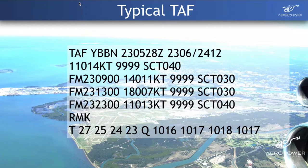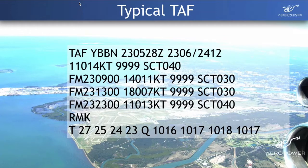What we're going to go through now is a typical TAF — this one is for Brisbane from last night. If you've seen this for the very first time, it does look quite imposing. There are a lot of numbers and text that don't immediately make sense. What we're going to do is basically walk through each segment of the forecast and break down what it means, so you can come back and look at TAFs like this and extract the information from them. It won't look quite so confronting.